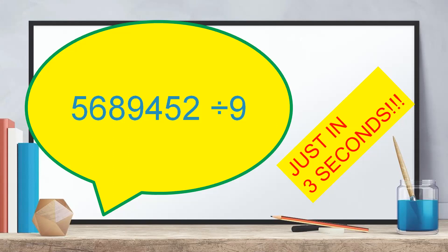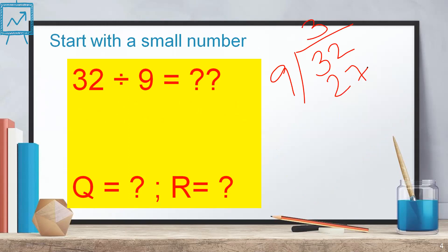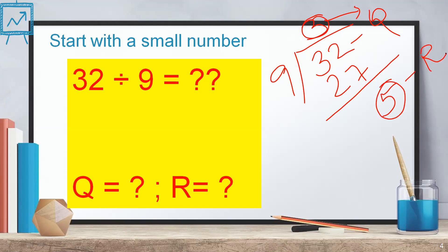Let's start with a small number. If I ask you to find out the quotient and remainder of 32 divided by nine, how you normally do it in the traditional way: you write 32 here and nine here, then think about the multiplication table of nine. You find that three nines are 27, then subtract 32 minus 27 to get five. So you write three as the quotient and five as the remainder.